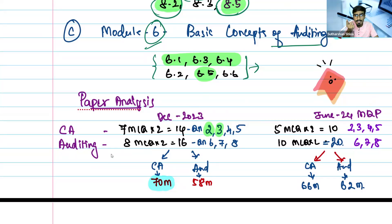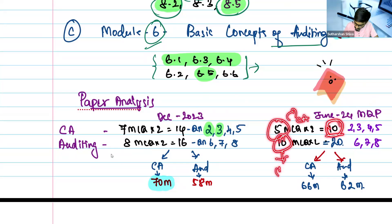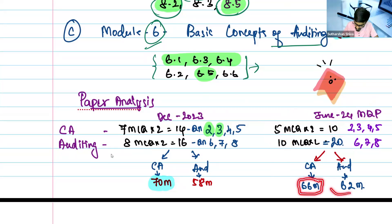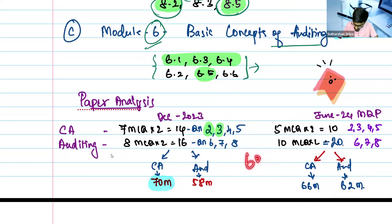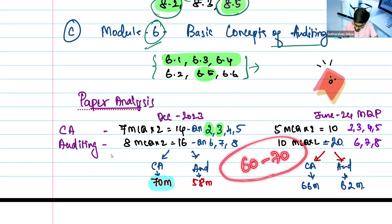When analyzing the June 2024 model question paper, only 5 MCQs were tested in corporate accounting while 10 MCQs were tested in auditing. Similarly, corporate accounting was tested for 66 marks and auditing for 62 marks. In any case, a minimum of 60 marks in corporate accounting is certain — you can say 60 to 70 marks. For auditing, it will be somewhere around 56 to 64 marks.